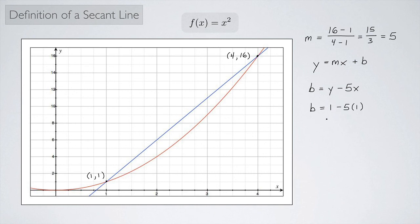And 1 minus 5, that's negative 4. And so the final equation of my secant line would be y equals 5x minus 4.